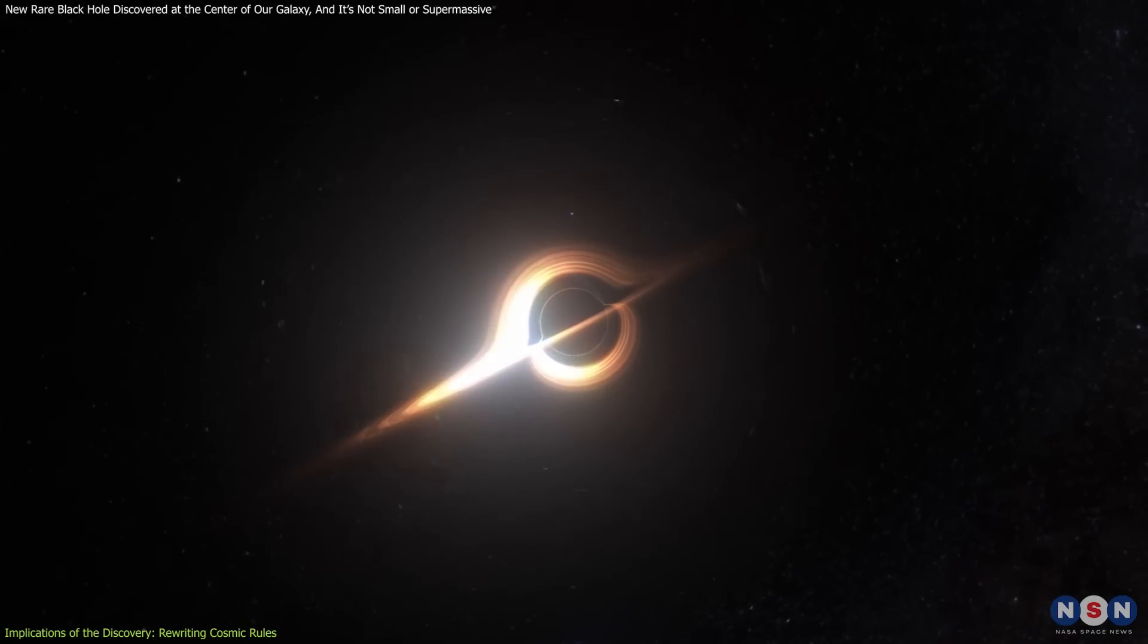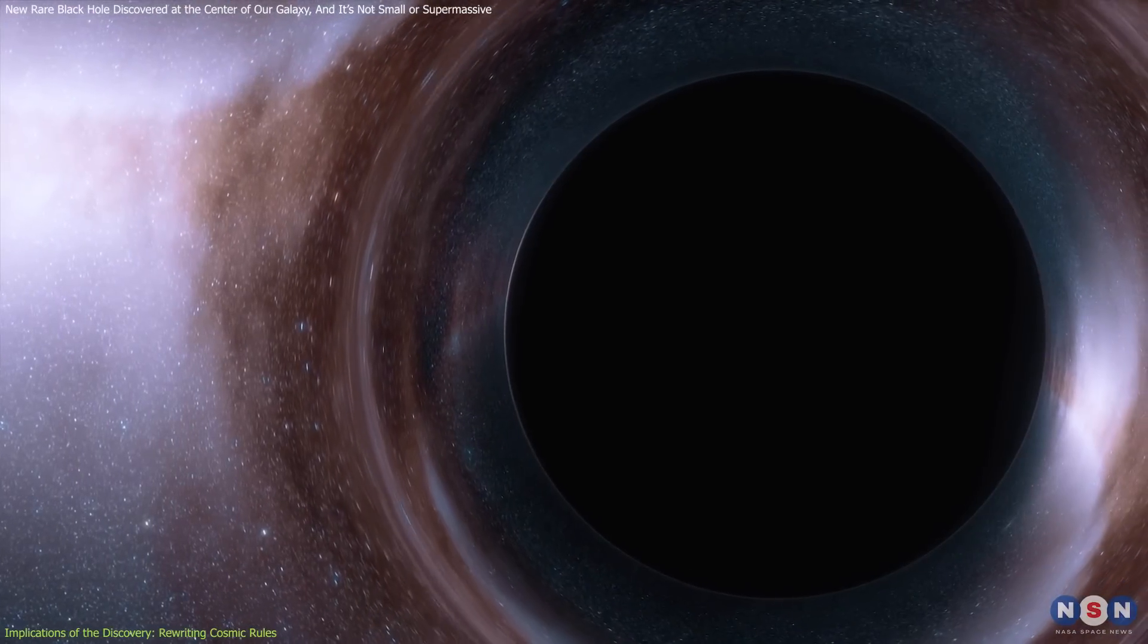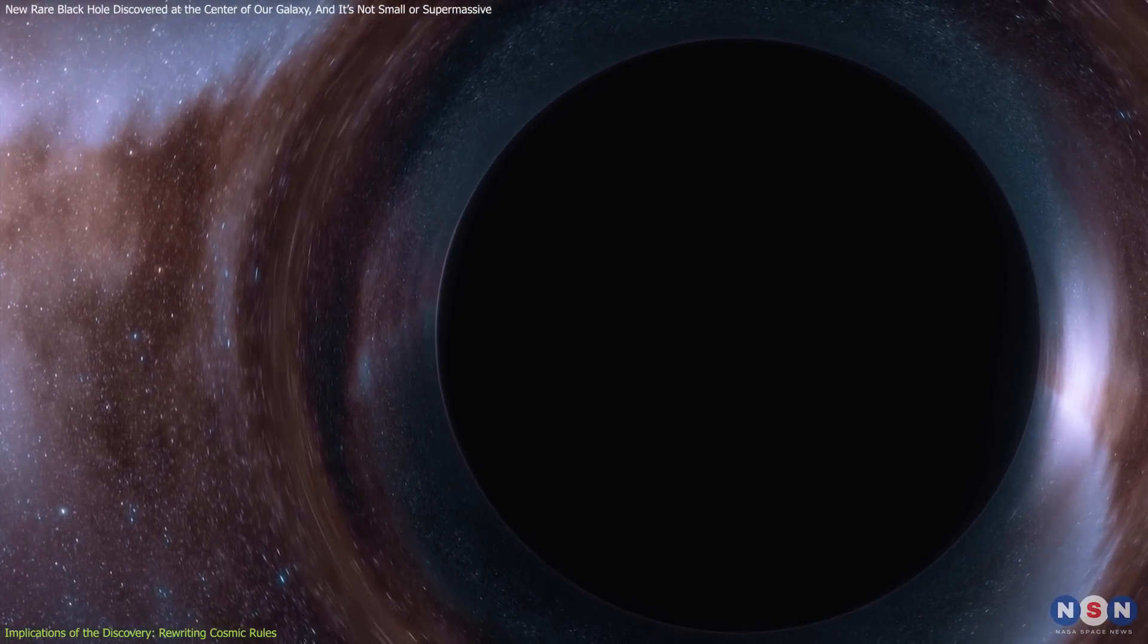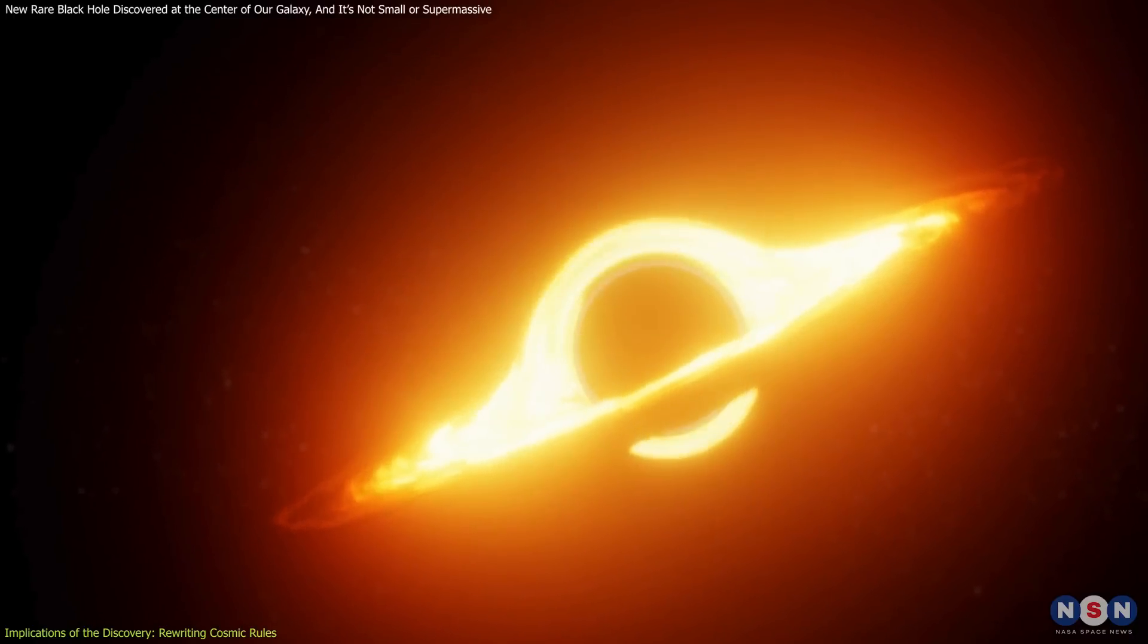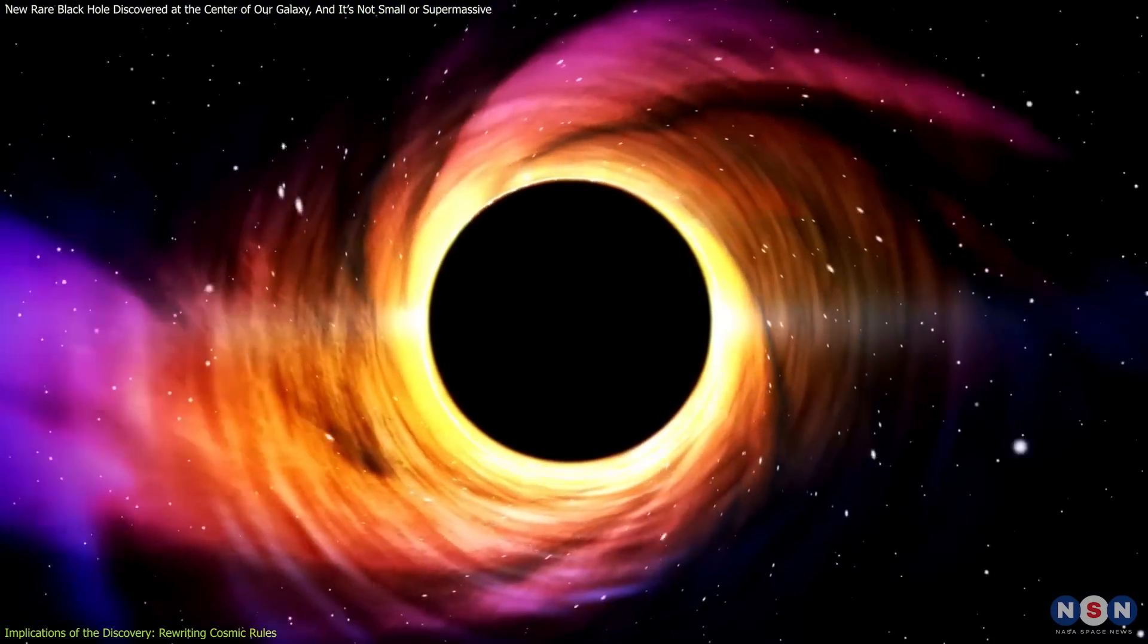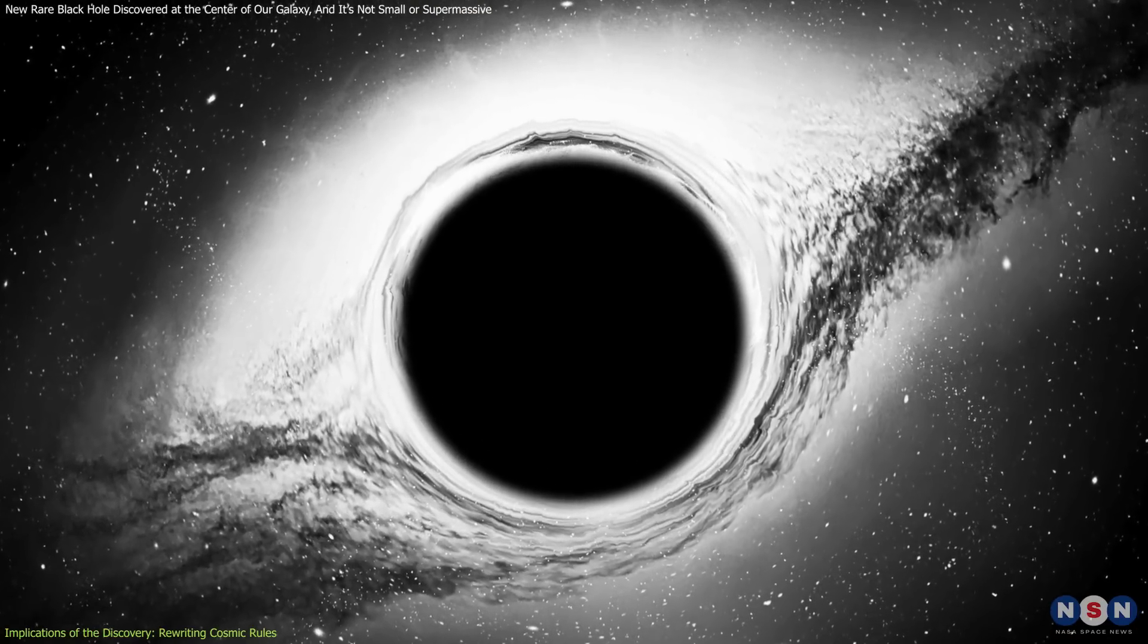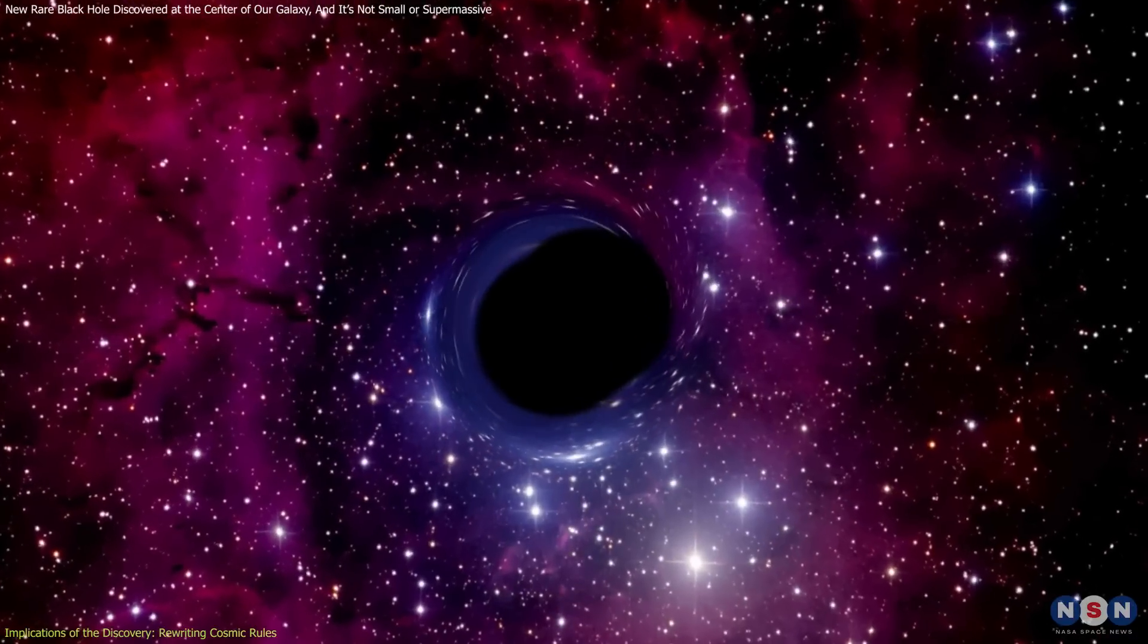Small stellar-mass black holes result from the collapse of massive stars, and supermassive giants at the centers of galaxies are millions to billions of times the mass of our sun. Intermediate-mass black holes, however, have remained elusive, often theorized but seldom observed. Moreover, this finding has significant implications for our understanding of black hole growth and evolution. The prevailing theory suggests that intermediate-mass black holes could serve as seeds for their supermassive counterparts, growing through the accretion of mass or merging with other black holes.